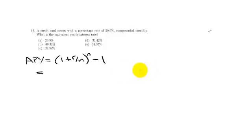And all you've got to do is plug in all the information from the problem. So, the interest rate, which is 29.9%, you'd write that as a decimal, .299, over 12, which is compounded monthly. And you'd raise that to 12, minus 1.